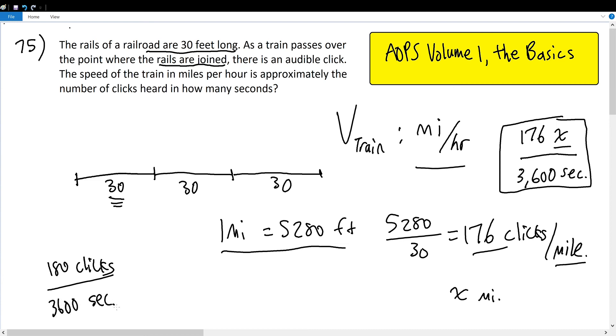If we evaluate this, it's supposed to be 176x, but then we round it to 180 times x. So 180x divided by 3,600 will be x clicks per 20 seconds.